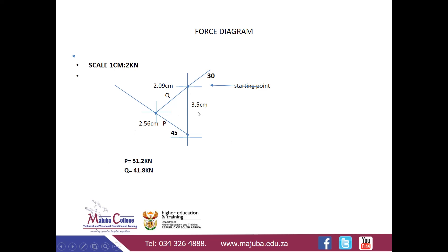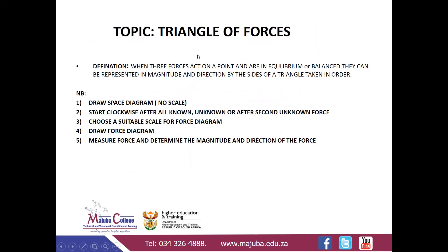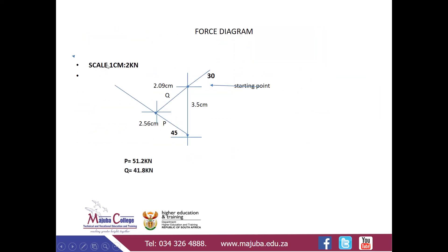Now, step three: choose a suitable scale and draw the force diagram. The suitable scale chosen is one centimeter equals two kilonewtons. That means for every two kilonewtons we have one centimeter, or for one centimeter we have two kilonewtons. Let's see what this means in terms of the scale for our forces.